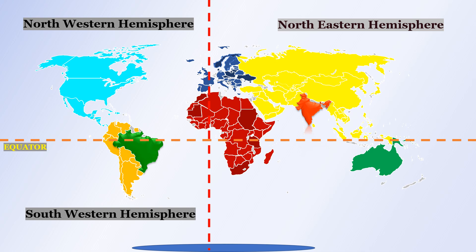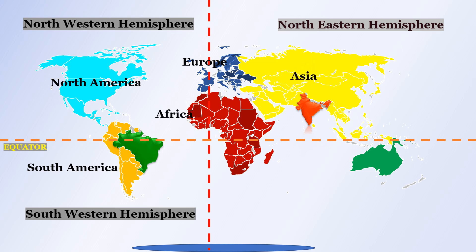Now we will study the seven continents of the Earth: North America, South America, Europe, Africa, Asia, Australia, and finally Antarctica. India lies in the southern part of the Asian continent, whereas Brazil occupies the eastern part of the South American continent.